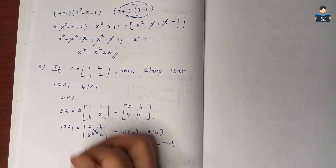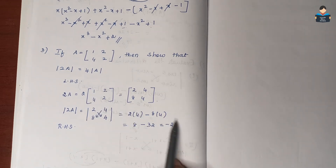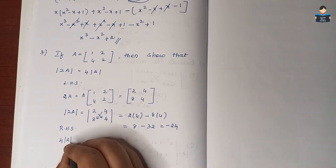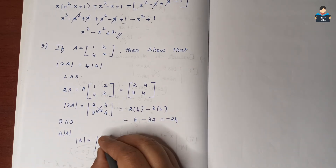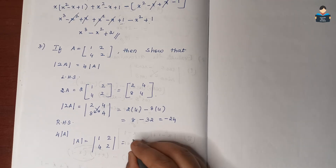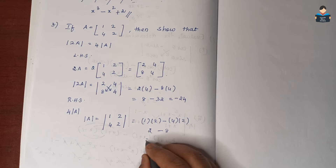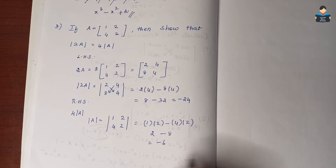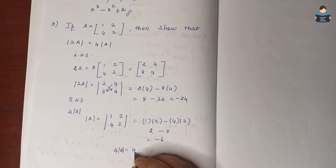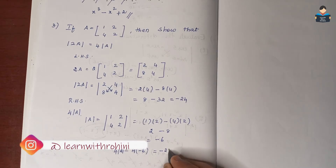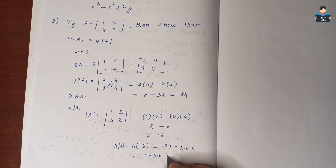For the RHS part, we solve 4 into det(A). Matrix A = [[1, 2], [4, 2]], so det(A) = 1 into 2 minus 4 into 2 = 2 minus 8 = minus 6. Therefore 4 into det(A) = 4 into minus 6 = minus 24. This equals the LHS, so LHS = RHS and hence proved.